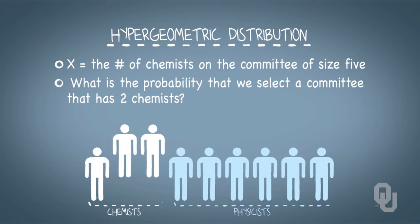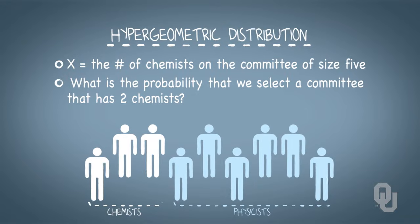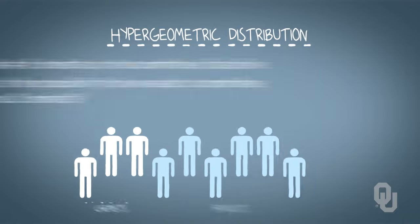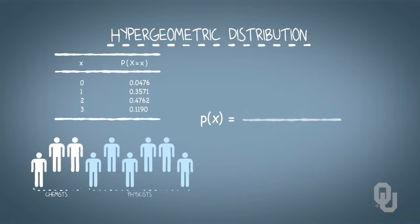We have to choose 2 chemists out of 3 possible chemists. Then naturally we have 3 more members of the committee, and they must be physicists. So we have to choose 3 physicists from 6 physicists. In the denominator, we count the ways we can select a committee of size 5 across all 3 plus 6 equals 9 choices. This probability is .4762.